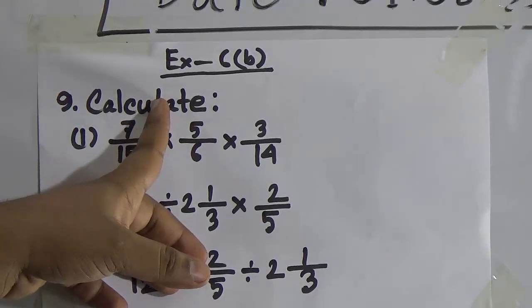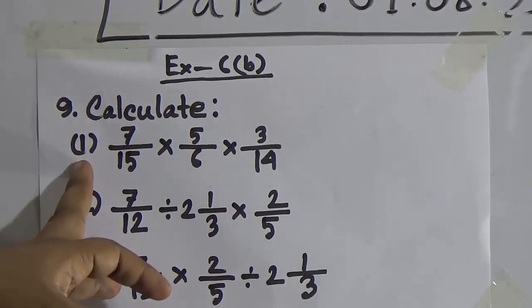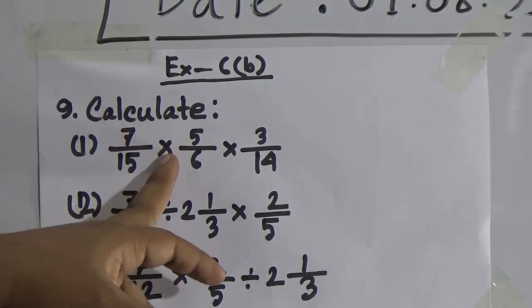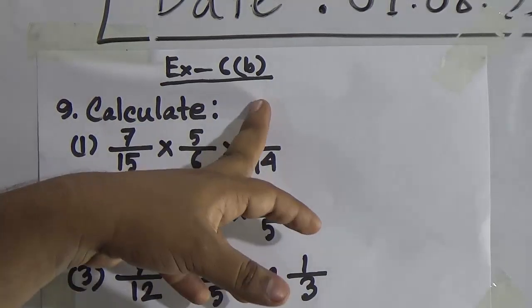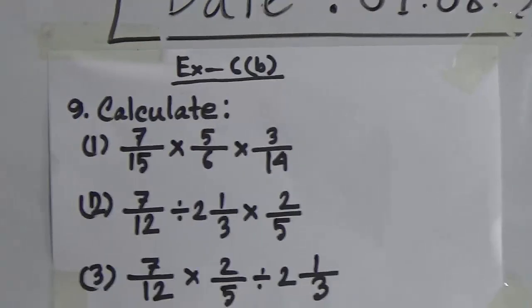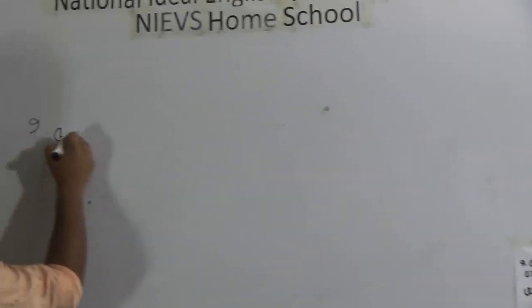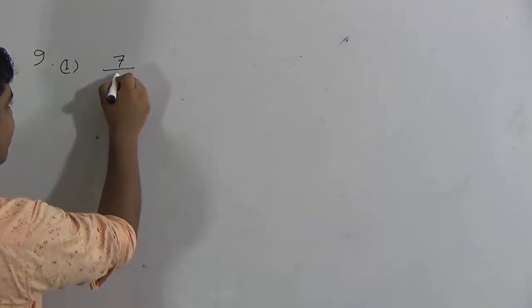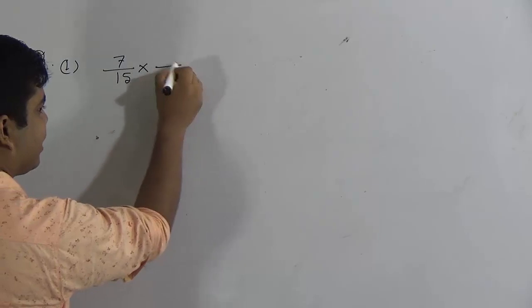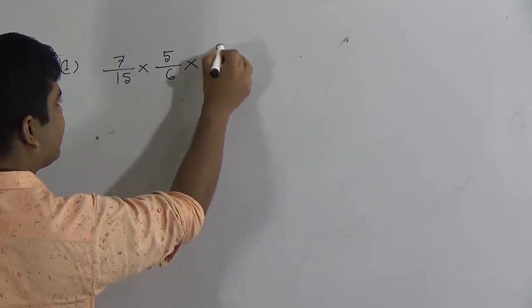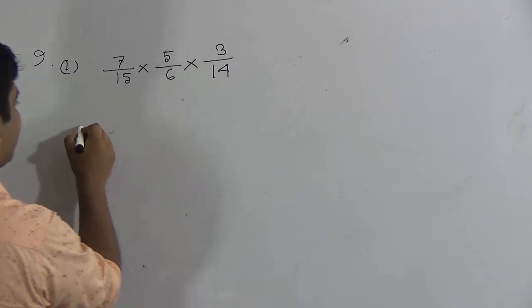At first we solve question number 9, sub-number 1: 7 divided by 15, multiplied by 5 by 6, multiplied by 3 by 14. So we pick up the question: 7 by 15, multiply by 5 by 6, multiply by 3 by 14.